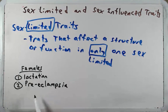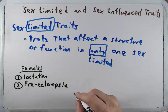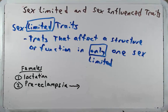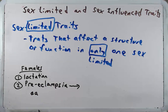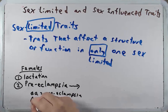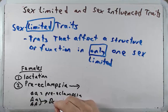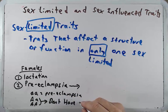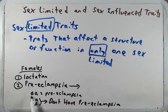As preeclampsia worsens, often the mother is placed on bed rest, sometimes for the rest of the entire pregnancy. In both of these cases, only women have the trait, but men also could carry the mutation. Using preeclampsia as an example: we know there are some recessive mutations on autosomes that can have an effect, so individuals who are little a little a have preeclampsia, while big A little a or big A big A don't. The only way a woman could be little a little a is if she gets one of those little a alleles from her father.